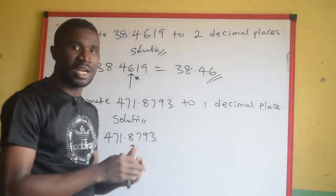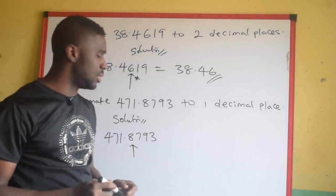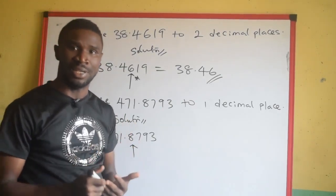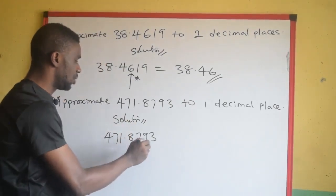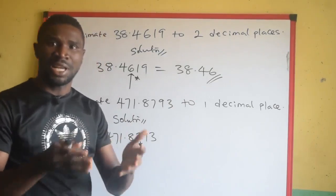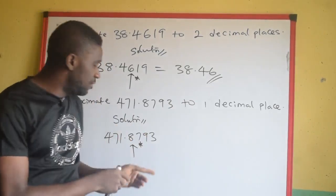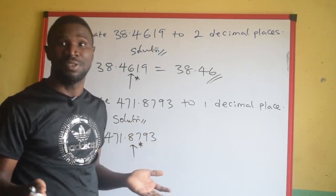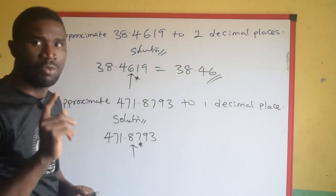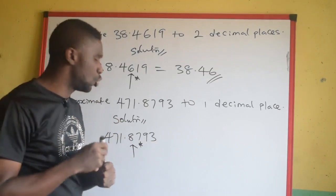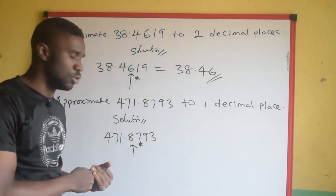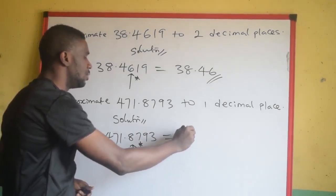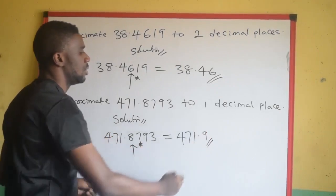Immediately I put this arrow, the next thing that should come to my mind is: what is the next number immediately after where I am supposed to stop? I am supposed to stop at 8, but the next number after 8 is 7. I put my asterisk. I ask myself: is this 7 up to 5? Yes, 7 is even more than 5. Since 7 is up to 5, we take 1 and add to where we are supposed to stop. We stop at 8, so when we add 1 to 8, the answer is 471.9.